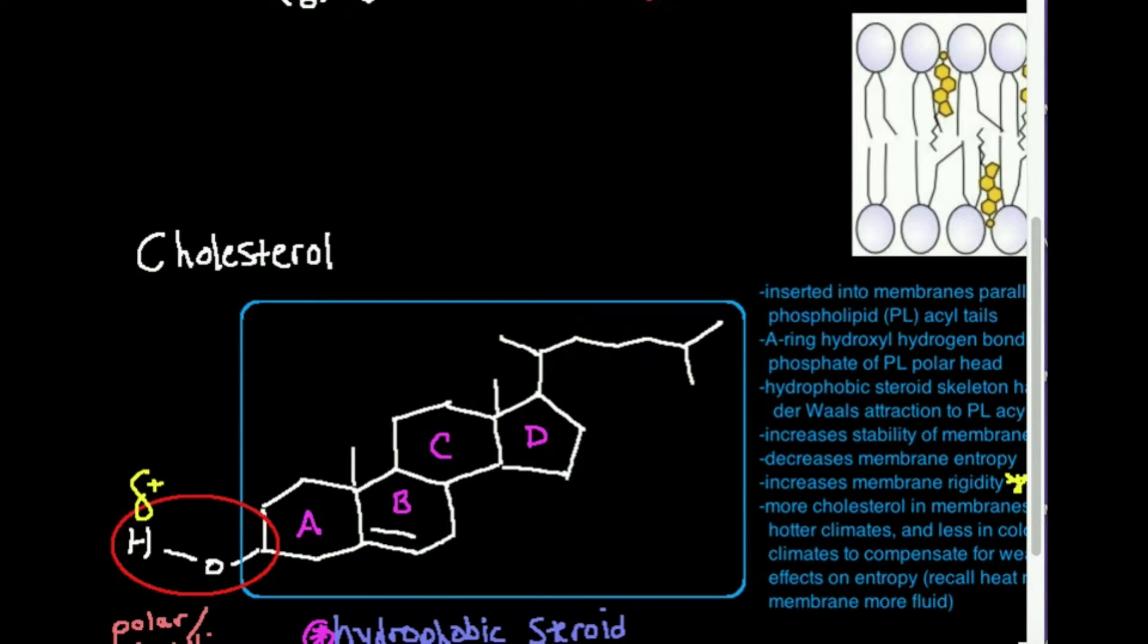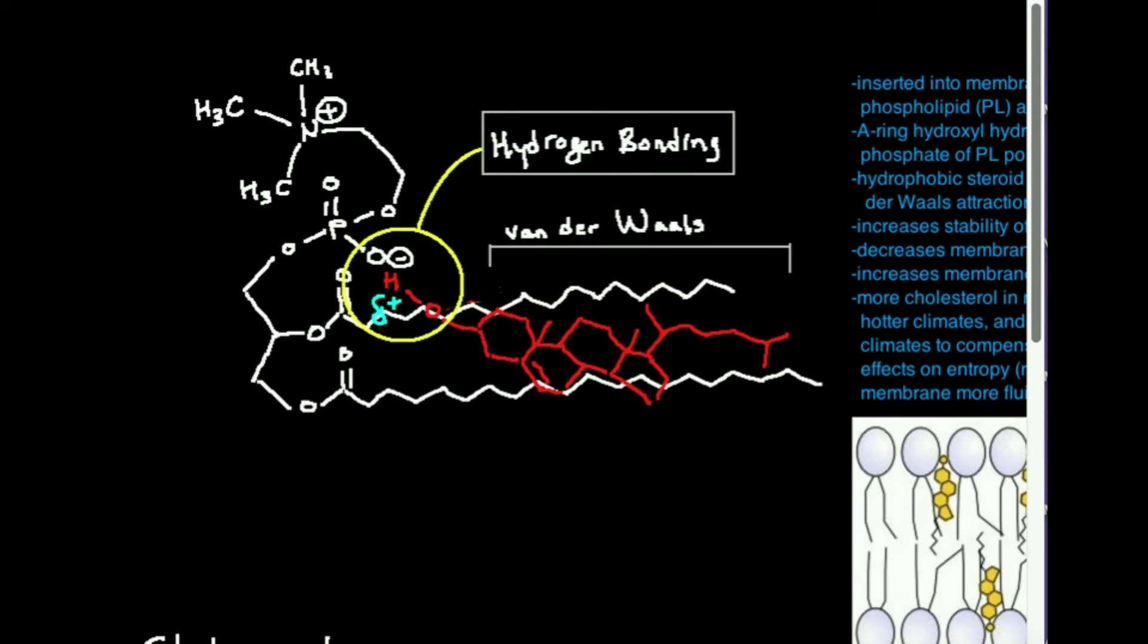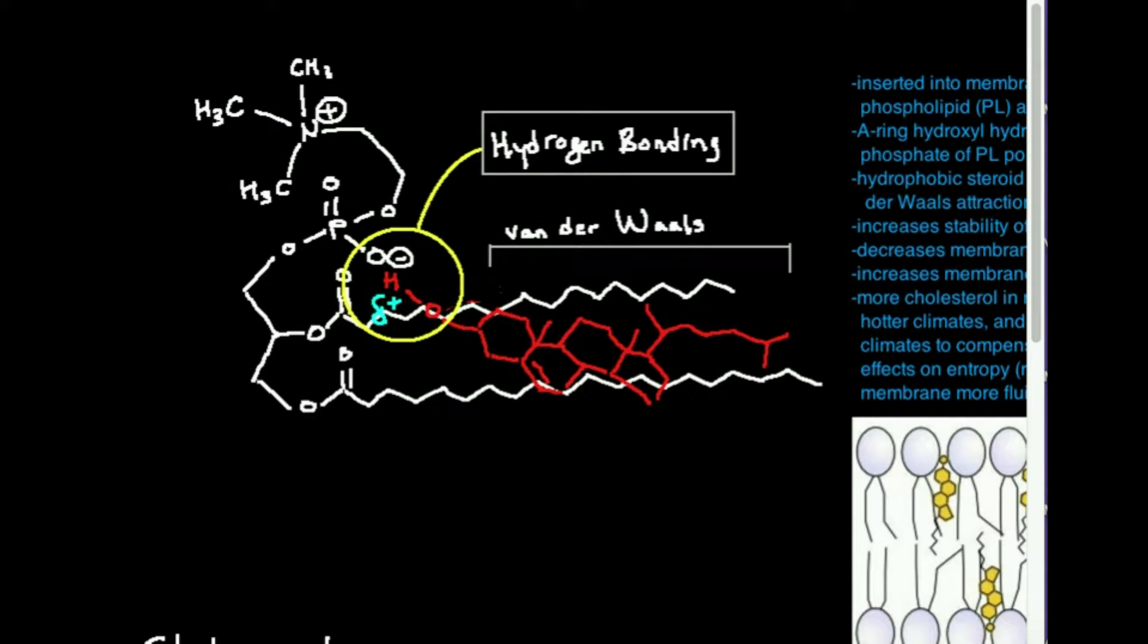Now we're actually going to specifically look at the molecular structure and see how it fits in. Notice that a lot of this stuff isn't drawn to scale, but I think it'll give you the idea. What I've done in white, this is a phospholipid, specifically a phosphatidylcholine. This applies to any of them.